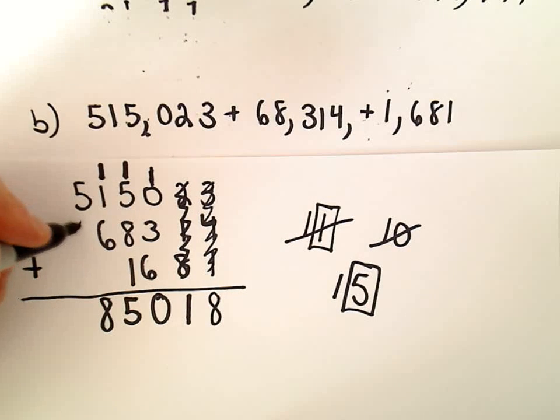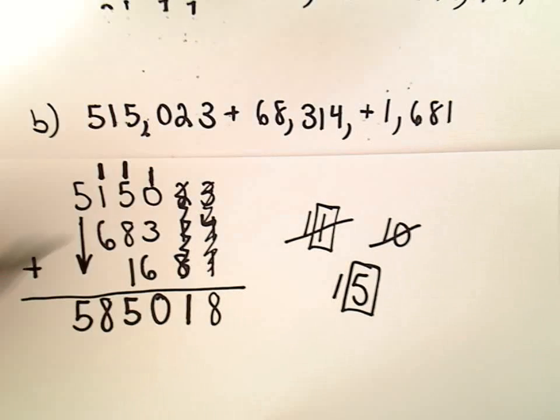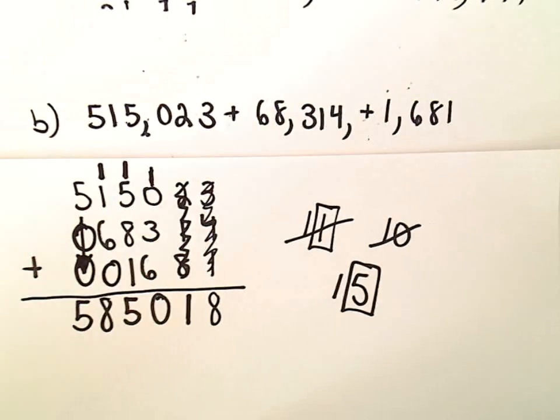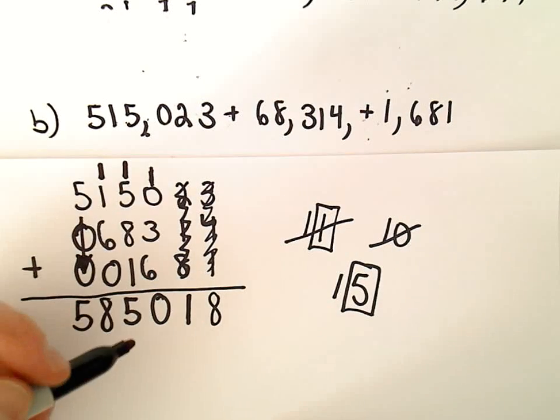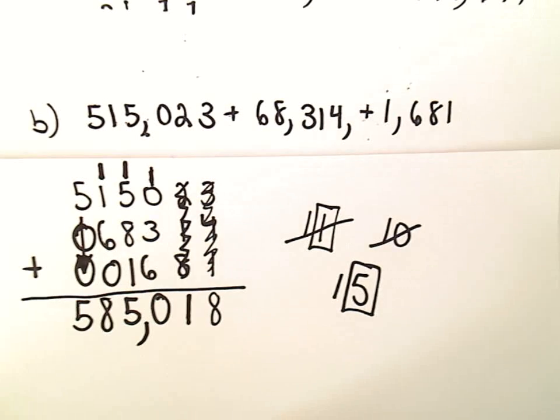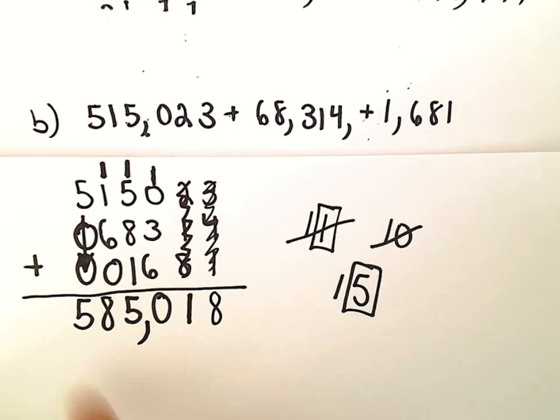So 1 plus 1 is going to be 2, 2 plus 6 is going to be 8. There's really nothing underneath the 5 so we'll just drop that down. Again you can think about those as being zeros if you want to in the other places, it's certainly technically correct. So it says if we add those three numbers together, we'll get 585,018.